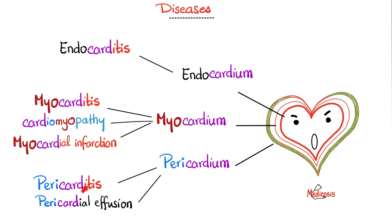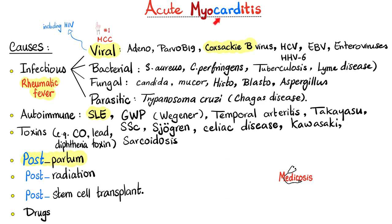What causes acute myocarditis? The most common cause is viral, including adenovirus, Parvo B19 virus, Coxsackie B virus, Hepatitis C virus, Epstein-Barr virus, enteroviruses, and human herpes virus number 6. Coronavirus can also lead to viral myocarditis.